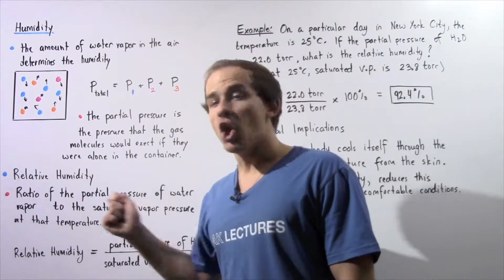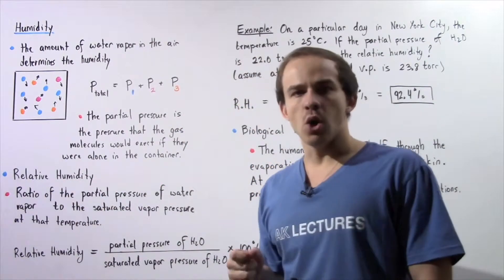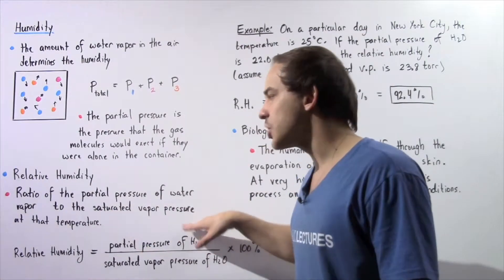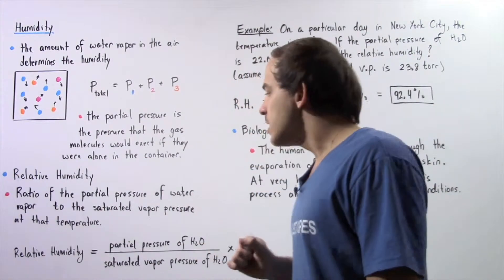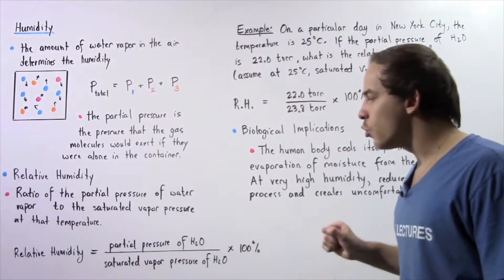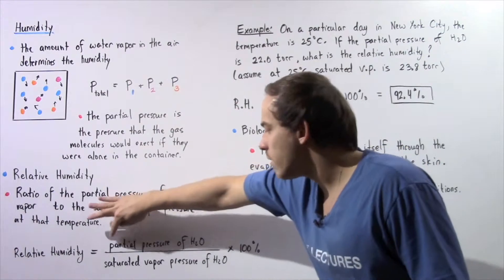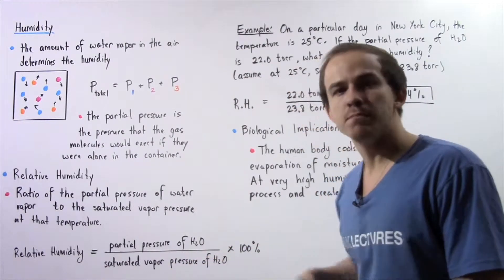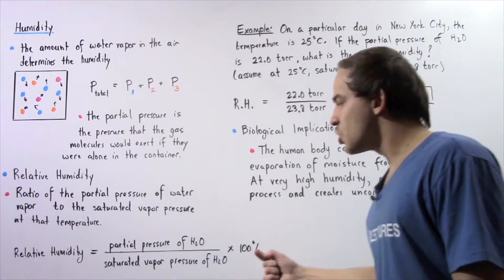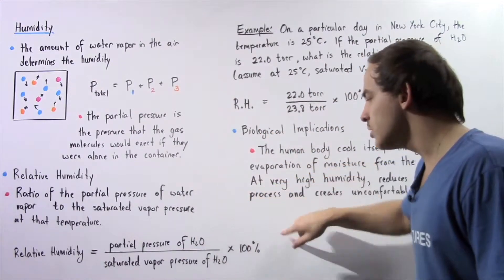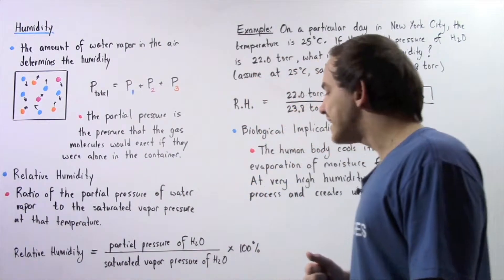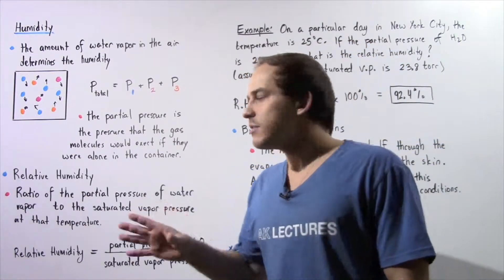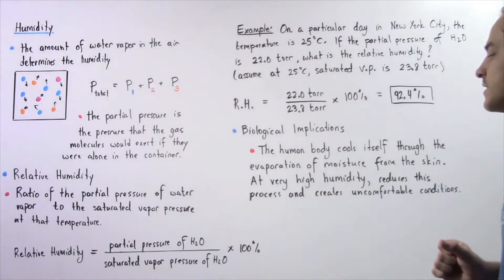We define something known as relative humidity as the ratio of the partial pressure of the water vapor to the saturated water vapor pressure at that specific temperature. We take the ratio of the partial pressure of the water vapor to the saturated water vapor pressure of water and multiply that by 100%. The saturated vapor pressure of water is simply how much water the atmosphere or the air can hold at that specific temperature.